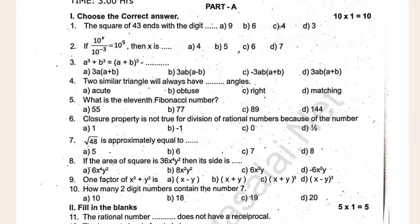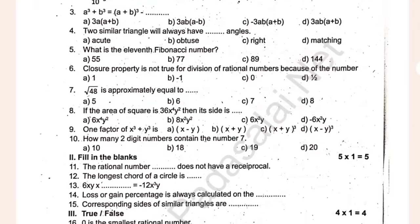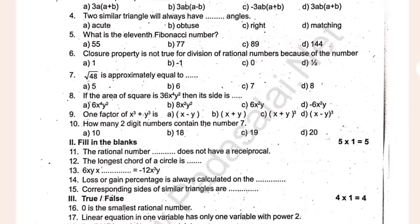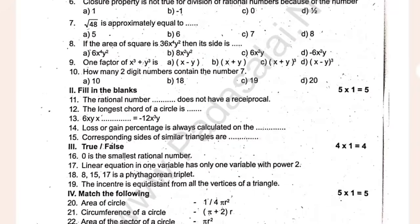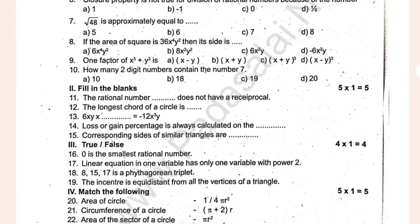I will start with one pattern. One rectangle line up: 6, 2, 8, 90. The final part is fill-in the blanks. The original number does not have a reciprocal. The longest chord of the circle is the diameter. 6xy times xy is equal to minus 12x cubed.